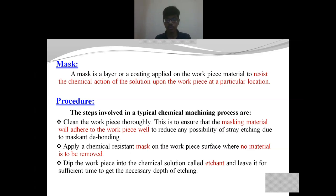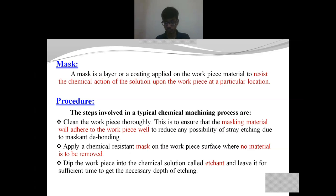Let us discuss the procedure involved in chemical machining. The first step is that the workpiece should be properly cleansed, because we are going to apply the masking material upon the workpiece surface. If there are impurities present on the surface, the masking material cannot properly adhere, resulting in cracks or irregular contours during the process. So we have to be careful in cleaning the workpiece surface so that the masking material gets properly adhered.